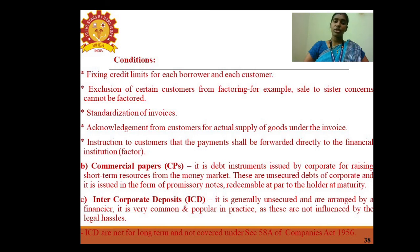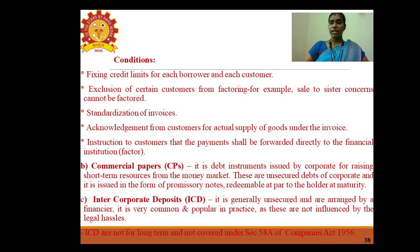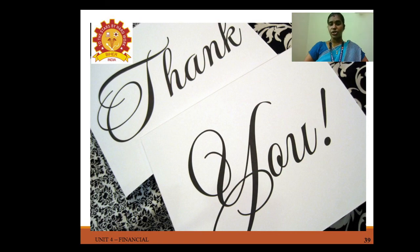Conditions for factoring include: fixing credit limits for each borrower and customer, exclusion of certain customers from factoring (e.g., sales to sister concerns cannot be factored), standardization of invoices, acknowledgement from customers for actual supply of goods, and instruction to customers that payment shall be forwarded directly to the financial institution. Commercial papers are unsecured debt instruments issued by corporates to raise short-term resources from the money market, issued as promissory notes redeemable at par at maturity. Intercorporate deposits are generally unsecured, arranged by a financier, and are not influenced by legal hazards.